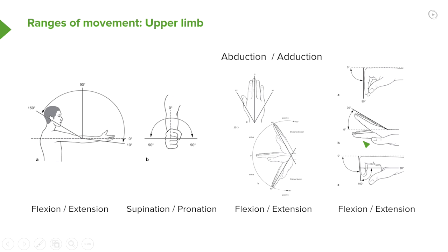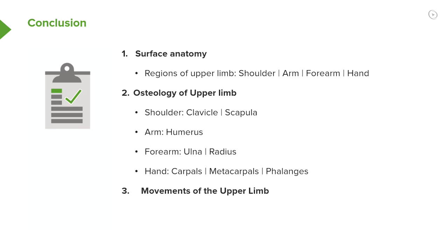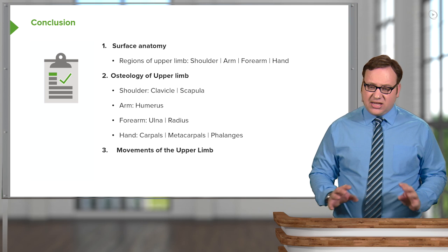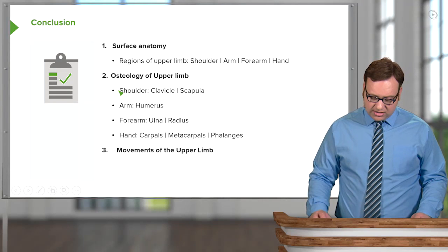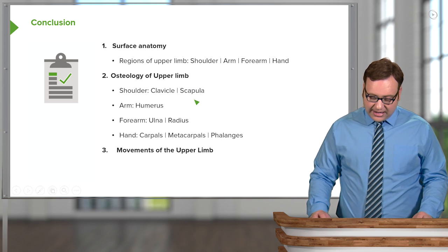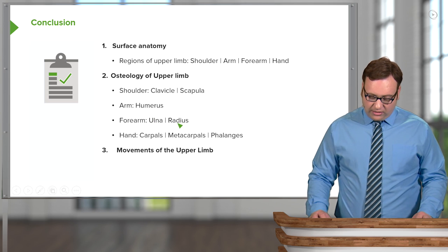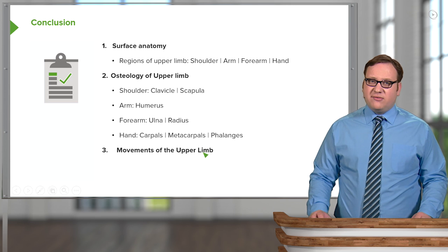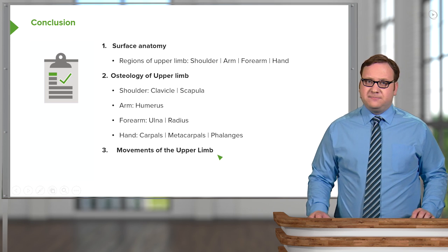So a whole range of movements gives the upper limb its characteristic high level of mobility. This is created by a whole series of muscles, which we'll talk about in later lectures, attached to those bony landmarks described. We started by looking at the surface anatomy and the various regions, then the various bony landmarks of the upper limb — the clavicle, the scapula, the humerus, the ulna, the radius, the carpals, the metacarpals and the phalanges — and finished by looking at the various movements of the upper limb.